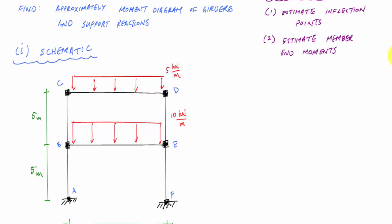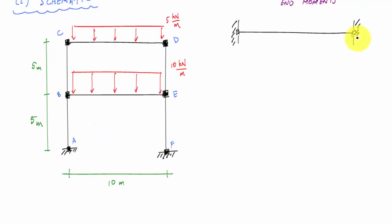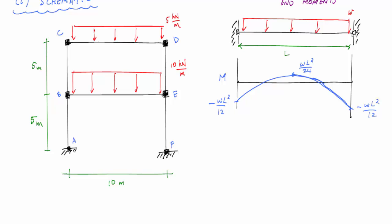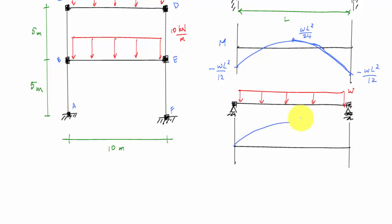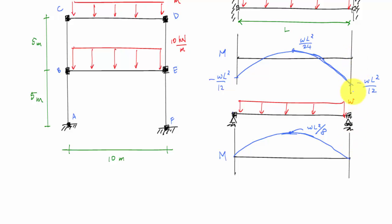I have uniformly distributed loads. I'm going to draw for you the moment diagrams associated with a fixed-fix beam and a simply supported beam. Here's the moment diagram for a fixed-fix beam with the uniformly distributed load, and now one for a simply supported beam. Member CD is somewhere in between these two. I'll notice that the inflection points are located — from the shear diagram calculations — at 0.21 times L from each end for the fixed-fixed beam. Whereas in the simply supported beam, the end moments are 0.